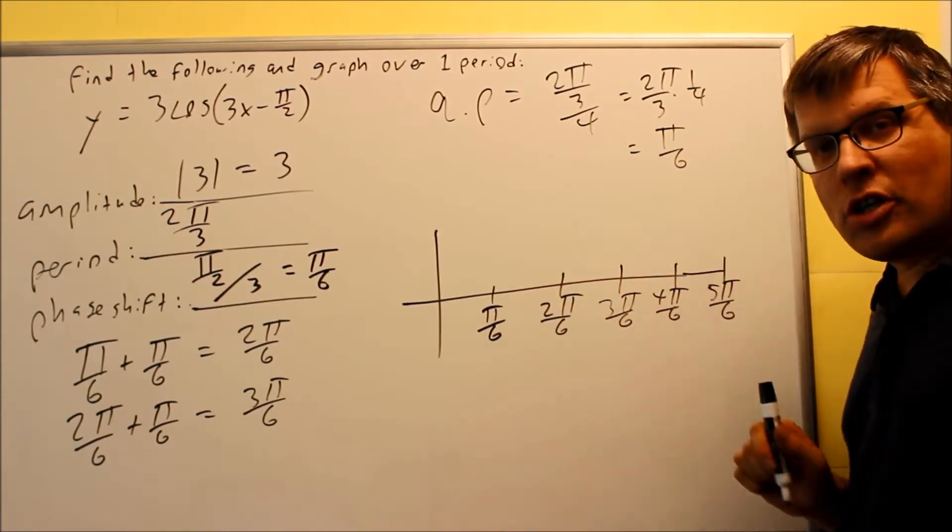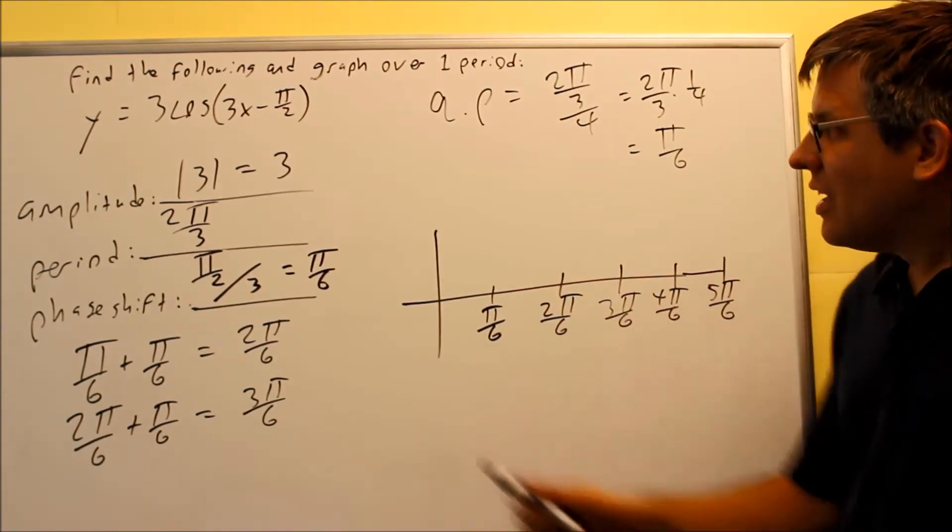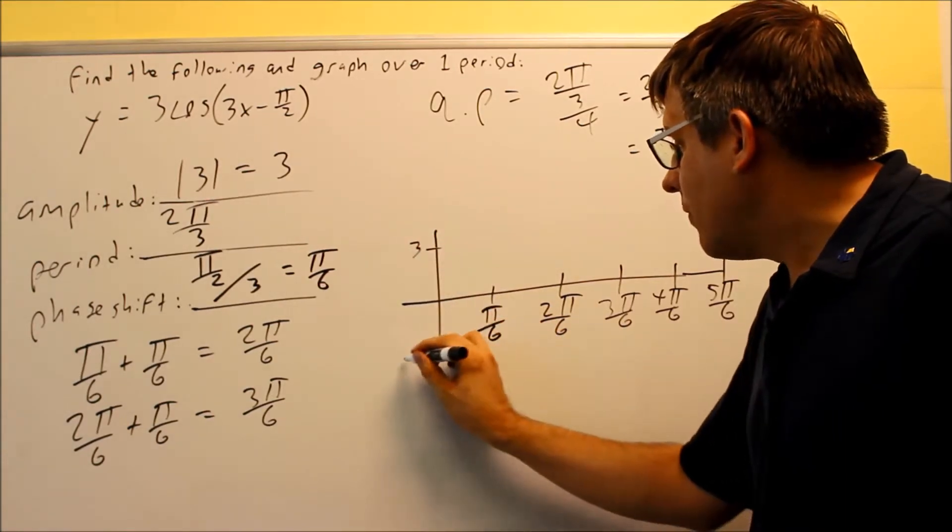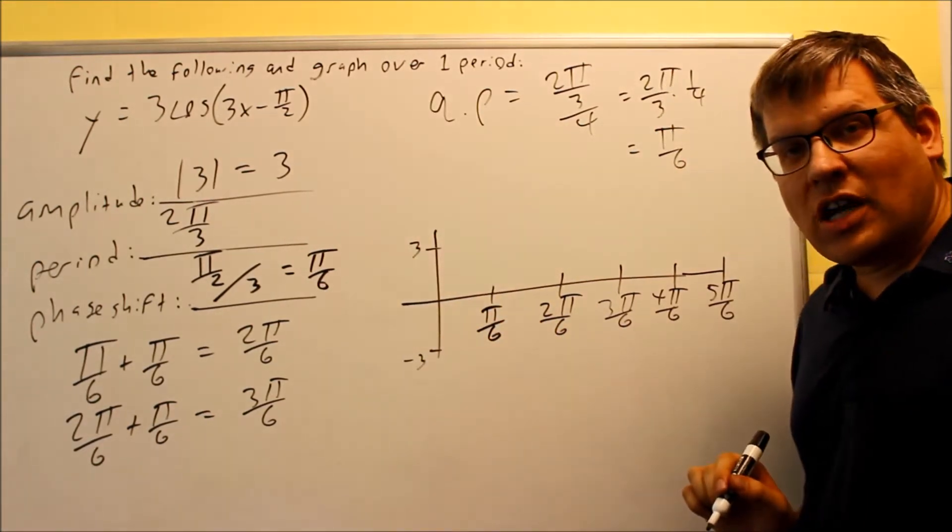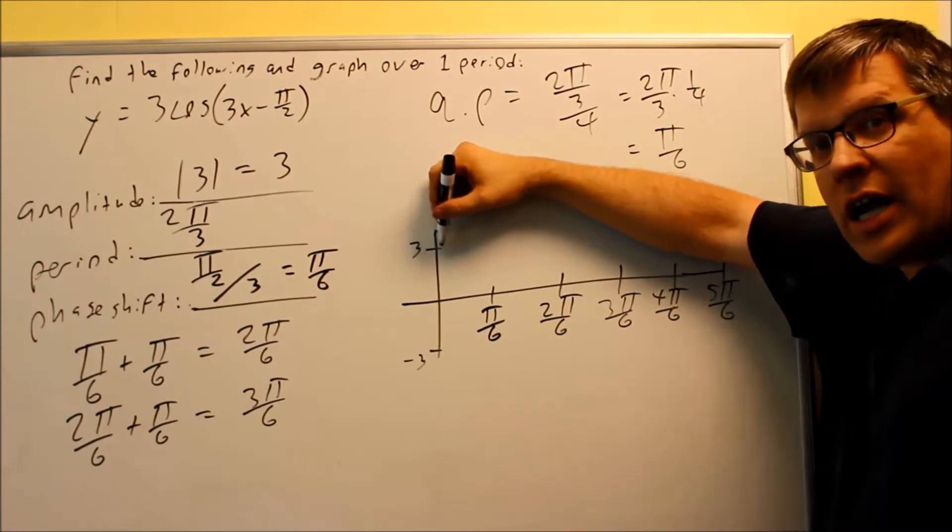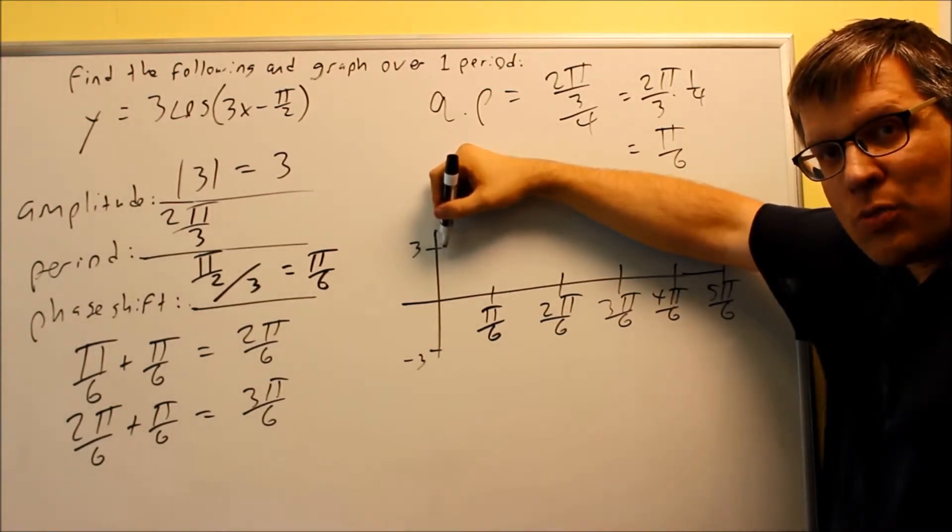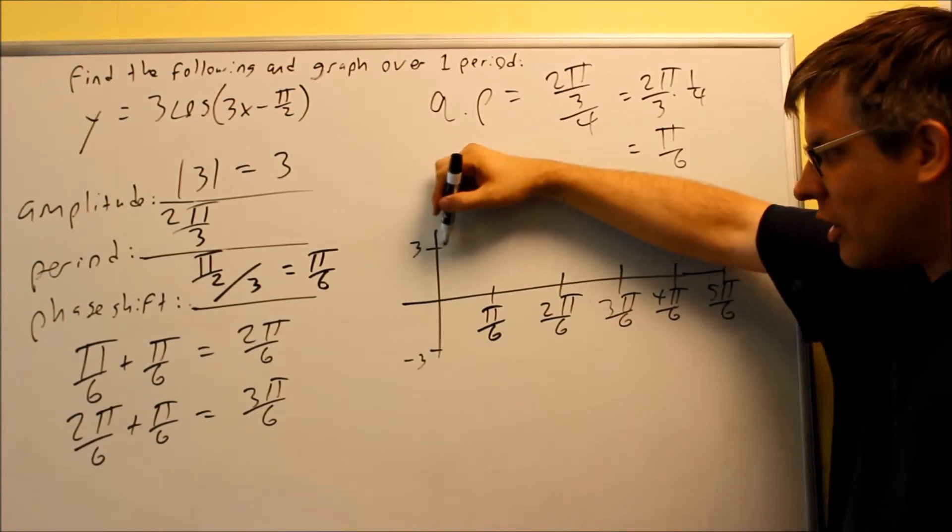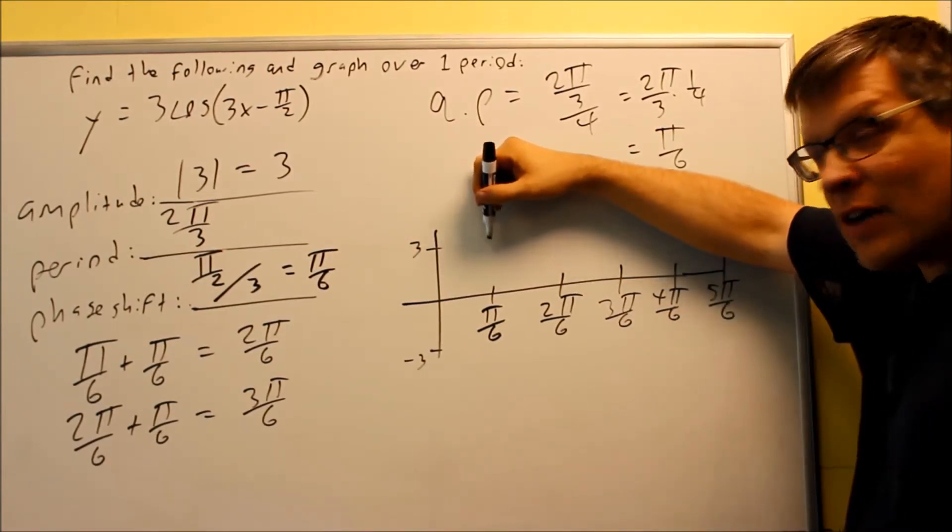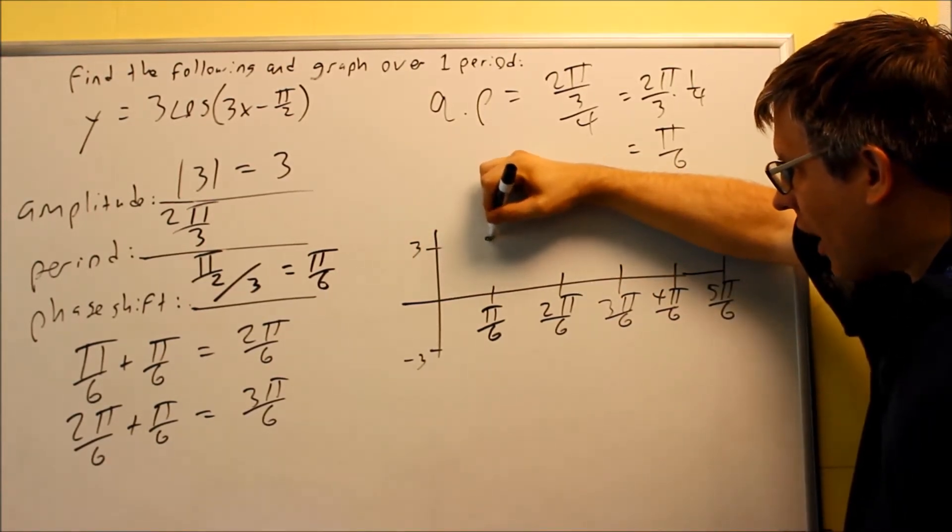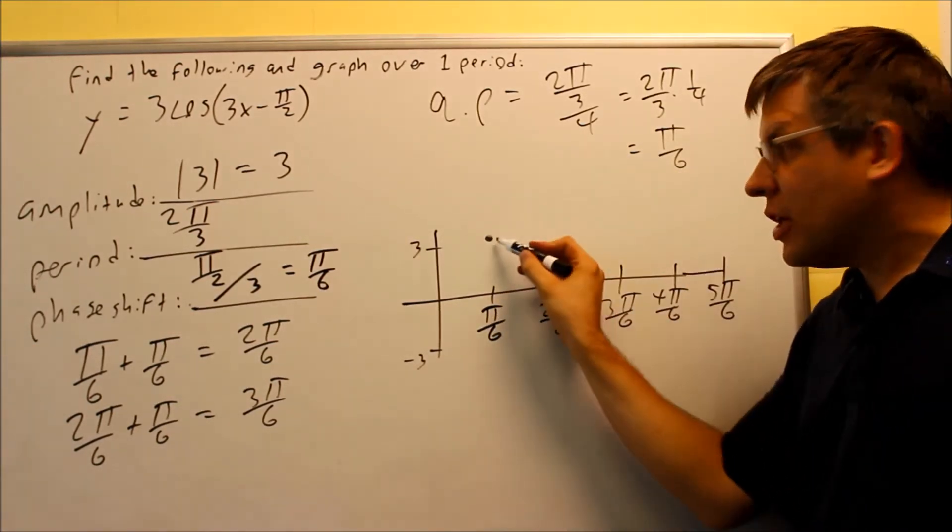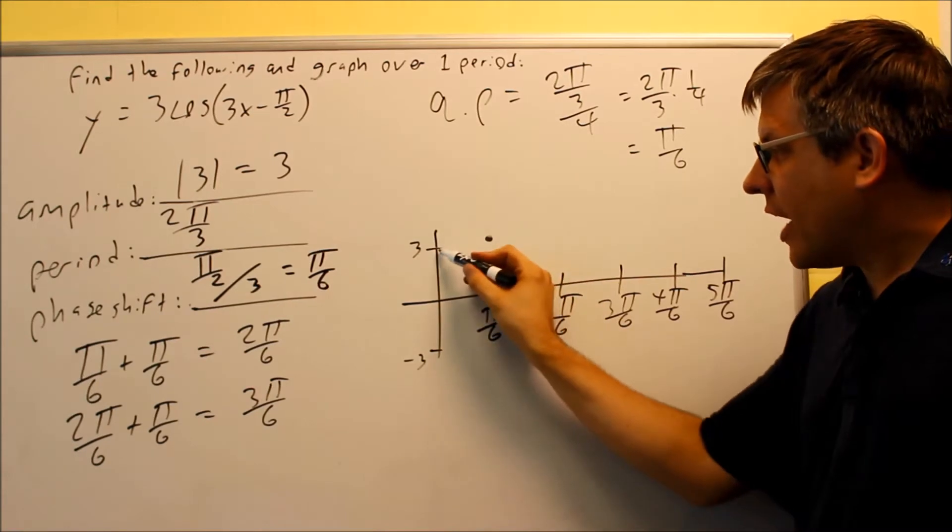Now that the key points are complete, I'm ready to draw in the graph. This is a cosine graph. Now before, I mentioned that your cosine graph has to start at the amplitude. However, the amplitude will not start here at this point. Now it's at 3, but the graph doesn't begin at zero. It actually begins here at π over 6. So I want to start my graph actually right there. So at π over 6, I'll be at the amplitude, not over here.